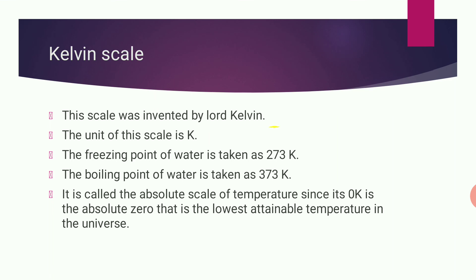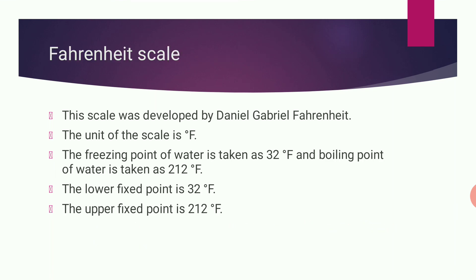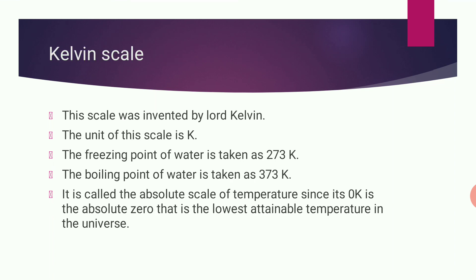Next, the Kelvin scale. It was developed by Lord Kelvin. The unit is K. The freezing point of water is 273 Kelvin and the boiling point of water is 373 Kelvin. This Kelvin scale is called the absolute scale of temperature because 0 Kelvin is the absolute zero — the lowest attainable temperature in the universe.